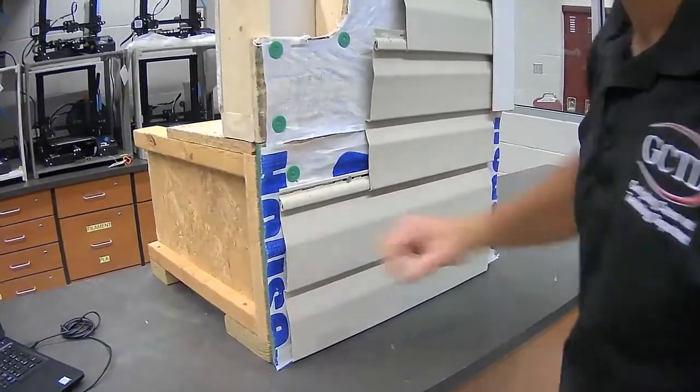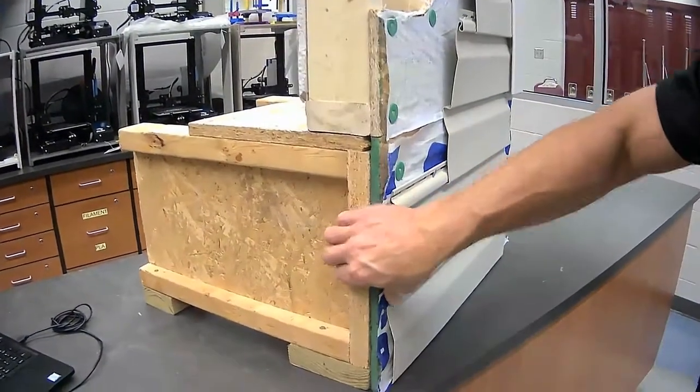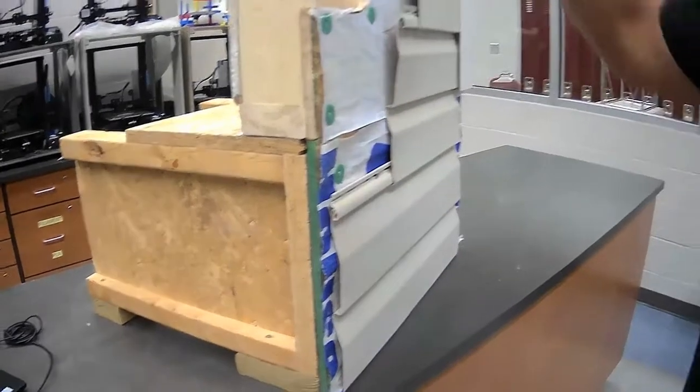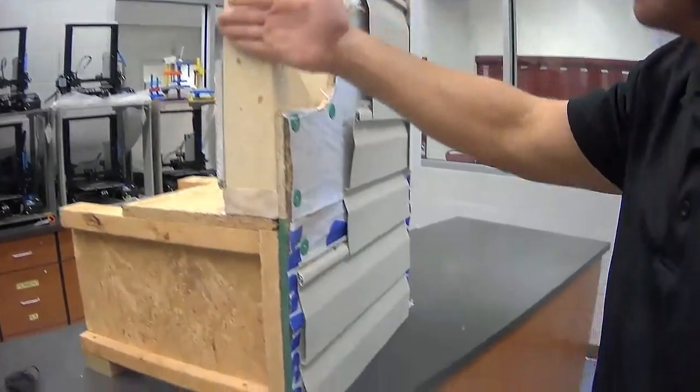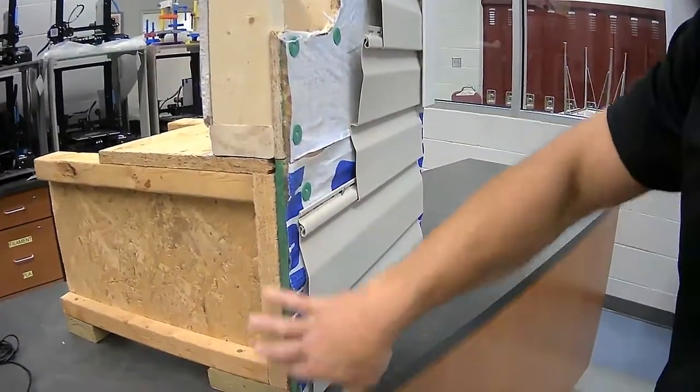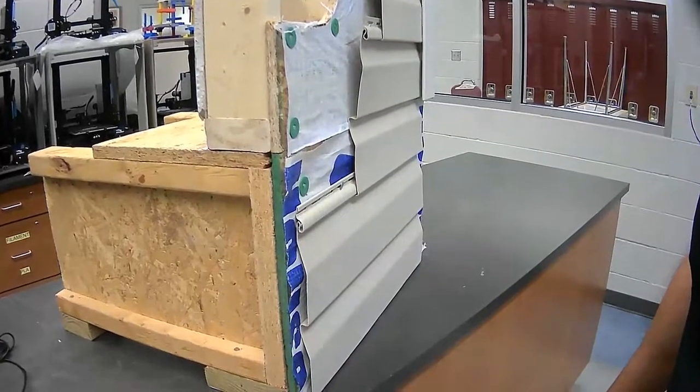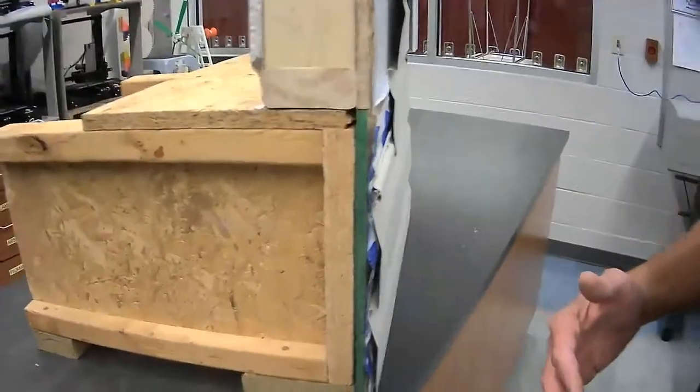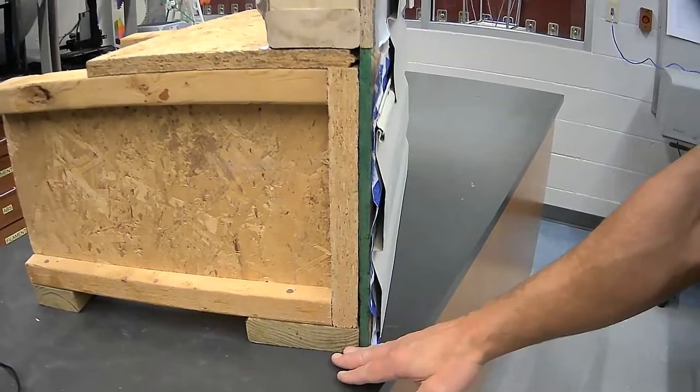So what I'm going to do is slide this wall around and start taking a look at the cross section, as if we've sliced down through this wall with a knife. Now we can look at the interior portions of the wall. Let's start at the bottom and work our way up.